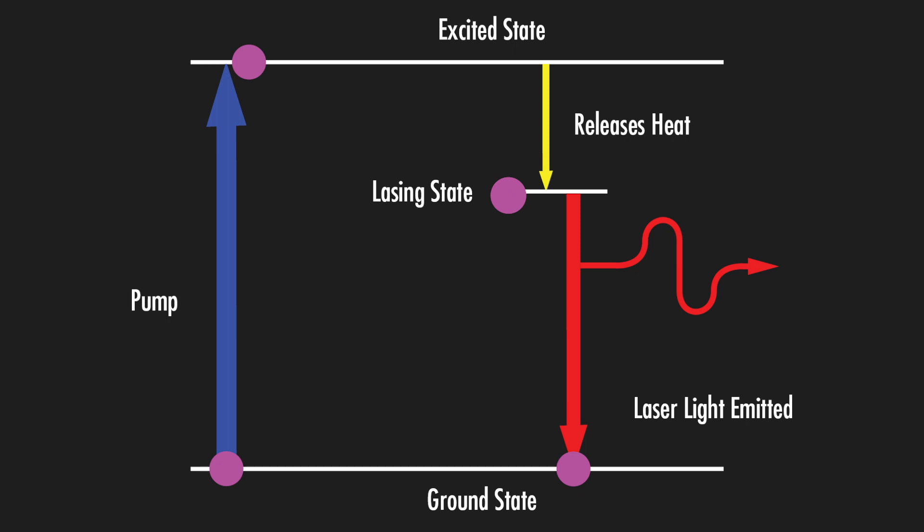When these electrons in the ground state are excited, they jump up to the excited states. However, they will not stay in these excited states for long. As the electron decays back to a lower state, a photon is emitted with the energy of the difference between the excited and the ground state. This process is called spontaneous emission.